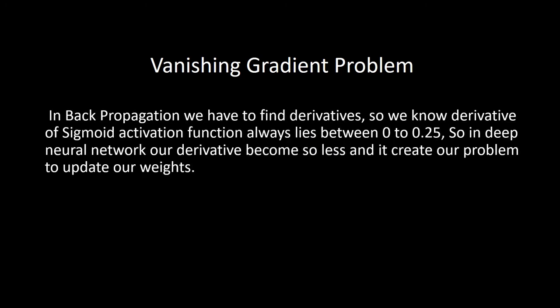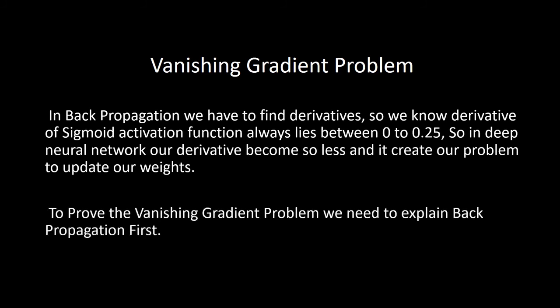Let's see the theory of the vanishing gradient problem. In back propagation we have to find derivatives. We know the derivative of the sigmoid activation function always lies between 0 and 0.25. So in a deep neural network, our derivative becomes very small and it creates a problem when updating our weights. To prove the vanishing gradient problem, we need to explain back propagation first.